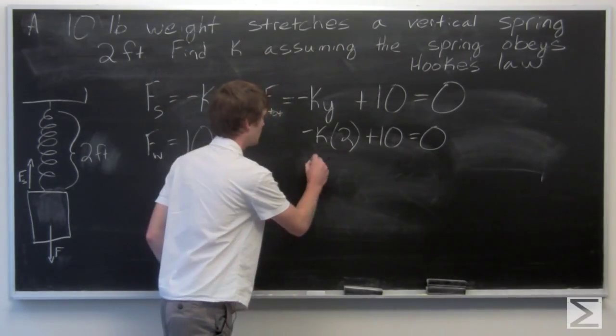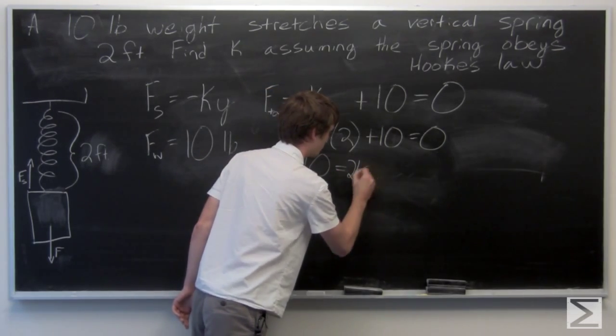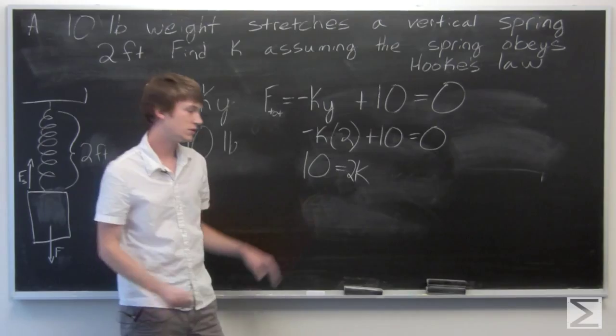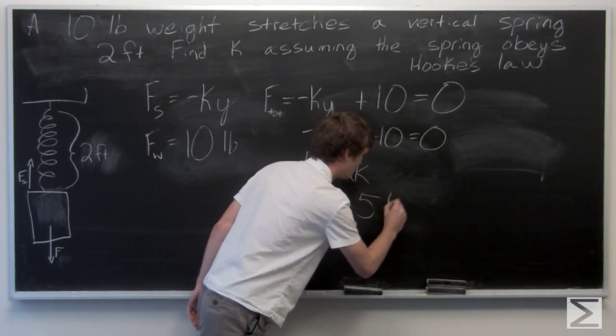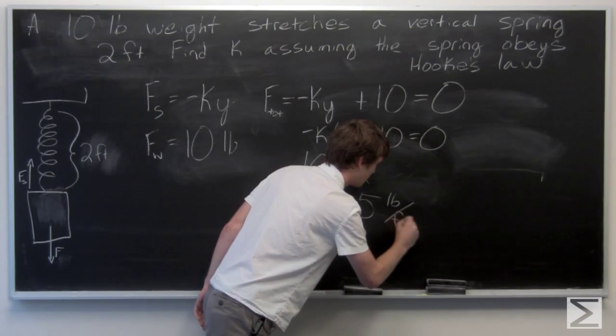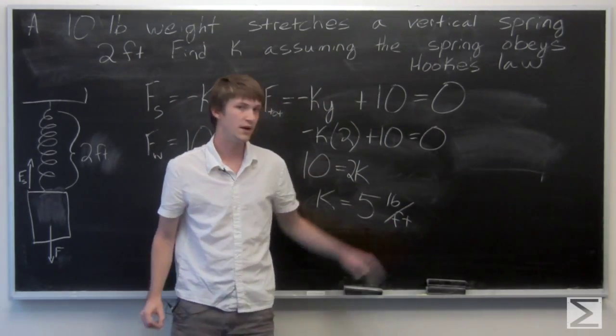Bring this term to the other side. 10 equals two K. And we have that the spring constant is five pounds per foot.